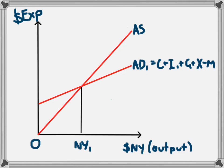In this situation, the level of investment is I₁, leading to aggregate demand of C+I₁+G+X-M. The decrease in investment leads to a decrease in aggregate demand.